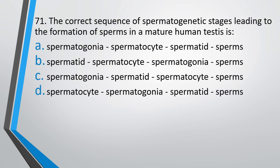Question number 71. The correct sequence of spermatogenetic stages leading to formation of sperms in a mature human testis is: spermatogonia, spermatocyte, spermatids, and finally sperms. The correct answer is option A. Spermatogonia form spermatocytes, which leads to spermatid formation, and finally sperms are formed.